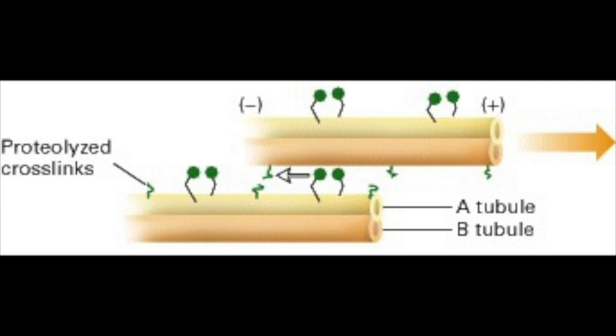Dynein works by trying to force the A microtubule of one outer doublet past the B microtubule of a neighboring outer doublet, causing both outer doublets to bend.